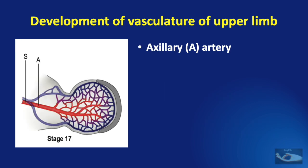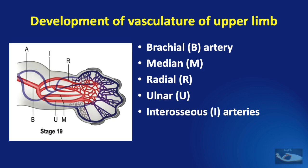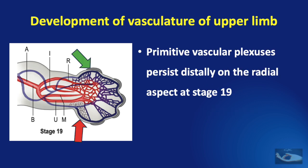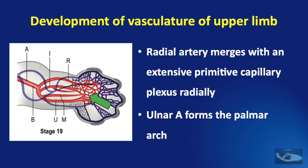The network of vessels gets channelized to form the axillary artery by Carnegie stage 17, and by stage 19, the brachial artery dividing into the median artery, radial artery, ulnar artery, and the interosseous arteries has formed. The primitive vascular plexuses persist distally on the radial aspect even at stage 19. The radial artery merges with an extensive primitive capillary plexus on the radial side, while the ulnar artery forms the palmar arch. This explains why it is the ulnar artery that forms the palmar arch.